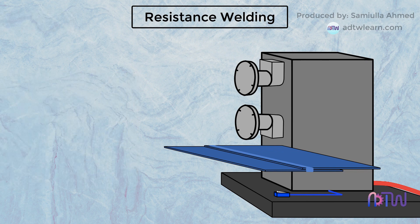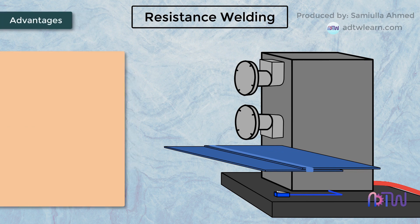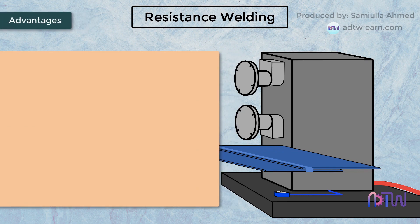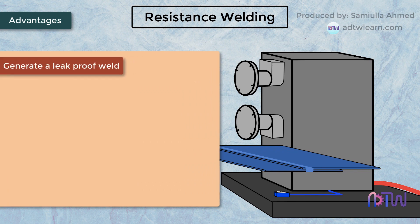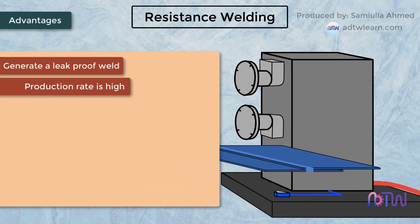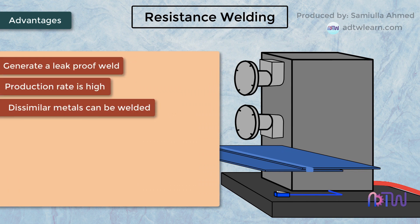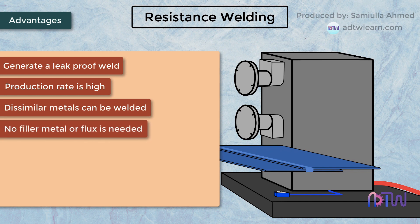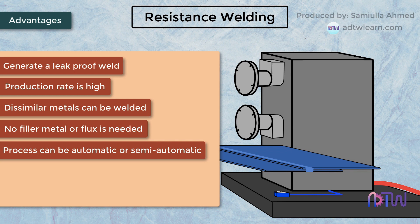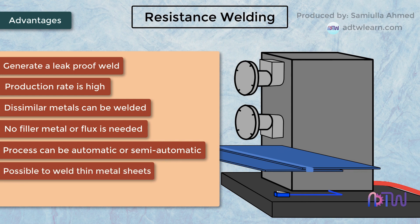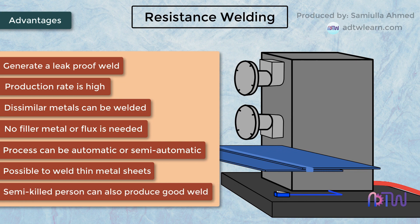Advantages of seam welding: It can generate a leak-proof weld, the production rate is high, dissimilar metals can be welded together, no filler metal or flux is needed, the process can be automatic or semi-automatic, it is possible to weld thin metal sheets, and a semi-skilled person can also produce a good weld.